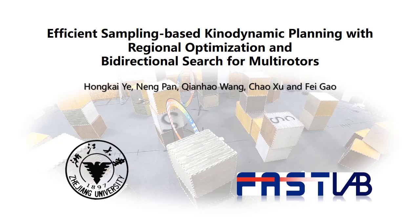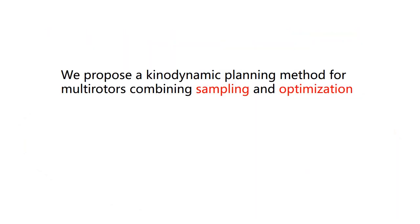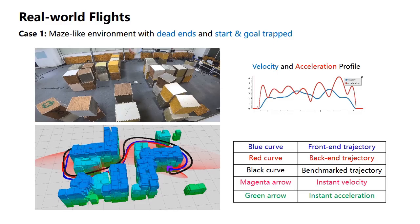Welcome to the video for our paper on efficient sampling-based kinodynamic planning with regional optimization and bidirectional search for multirotors. We propose a kinodynamic planning method for multirotors combining sampling and optimization. First, let me show you some real world navigation experiments incorporating the proposed planning method.